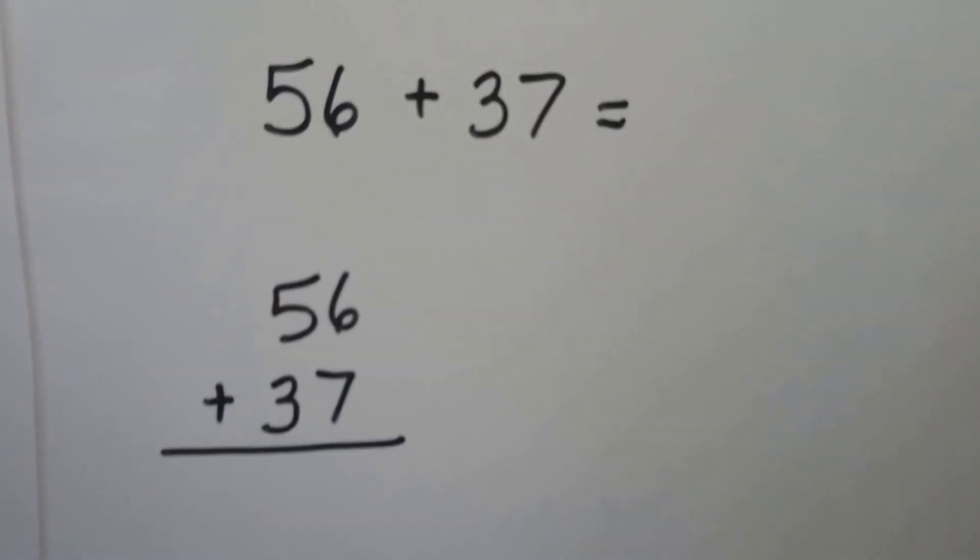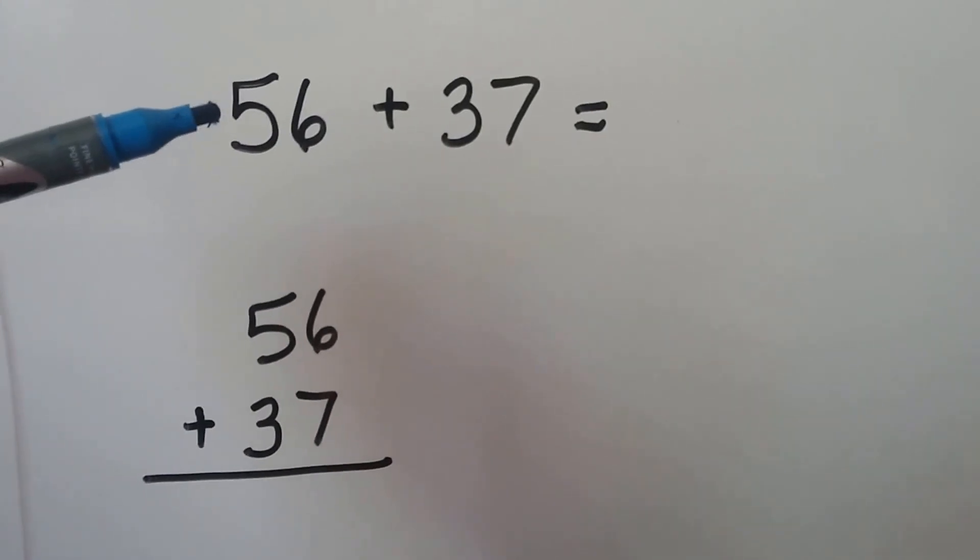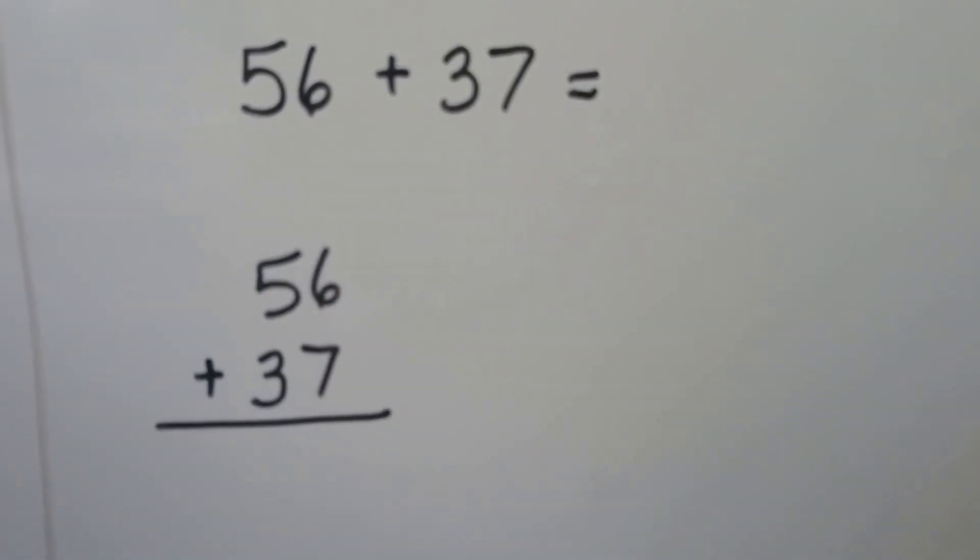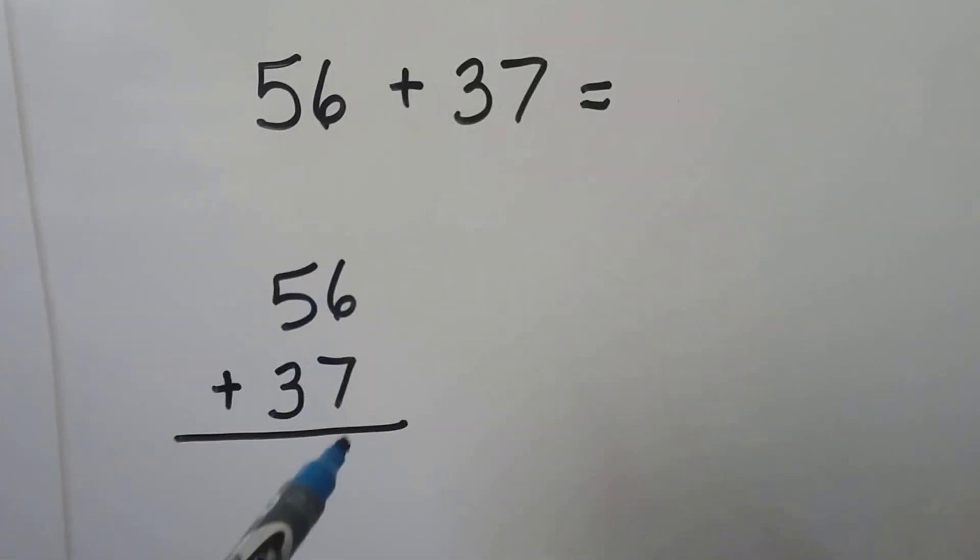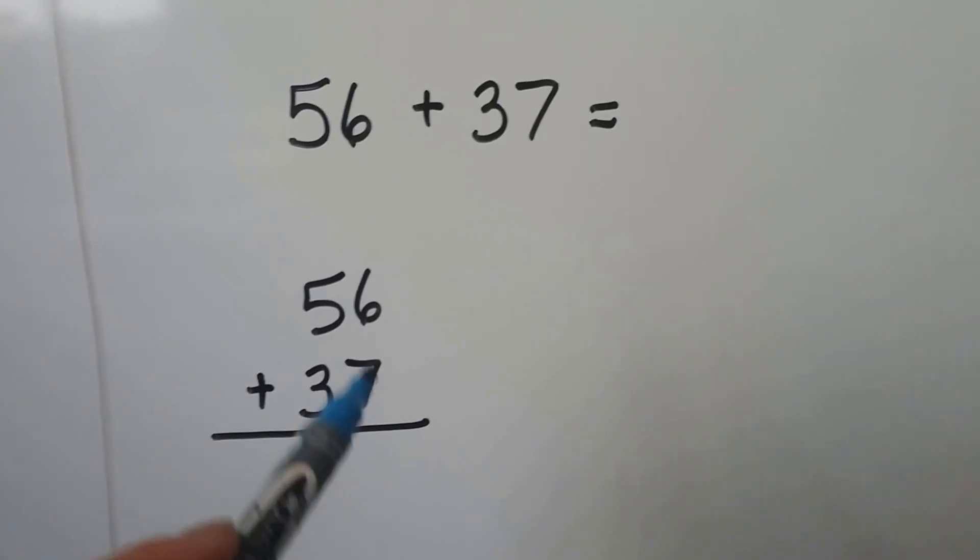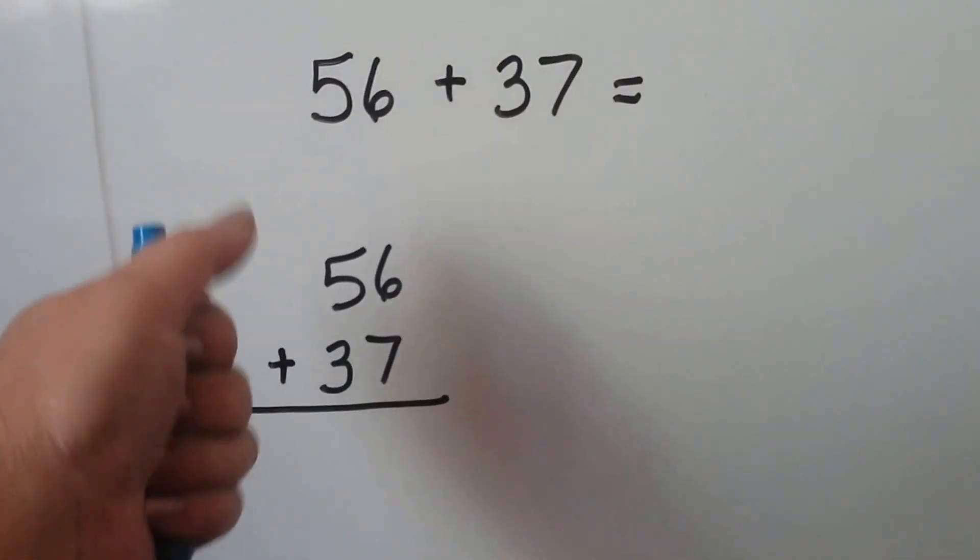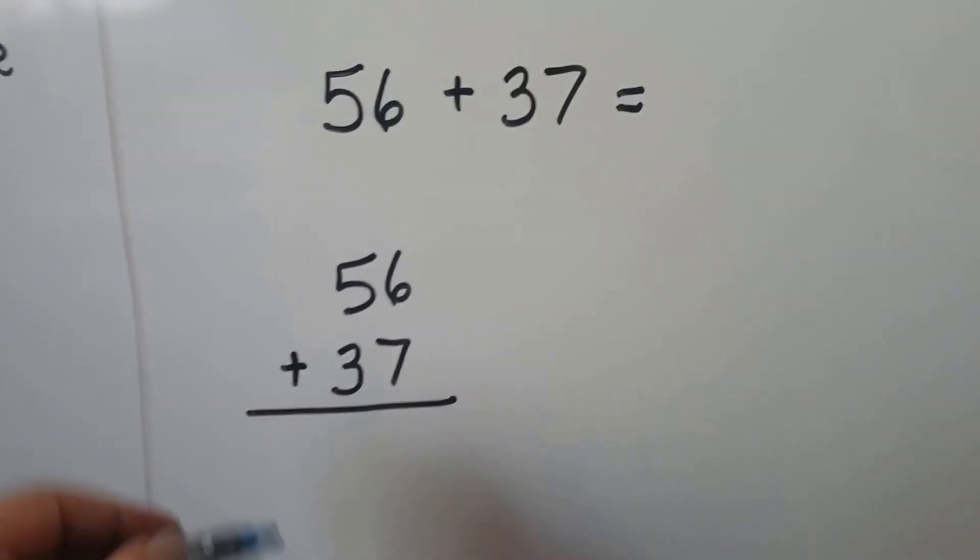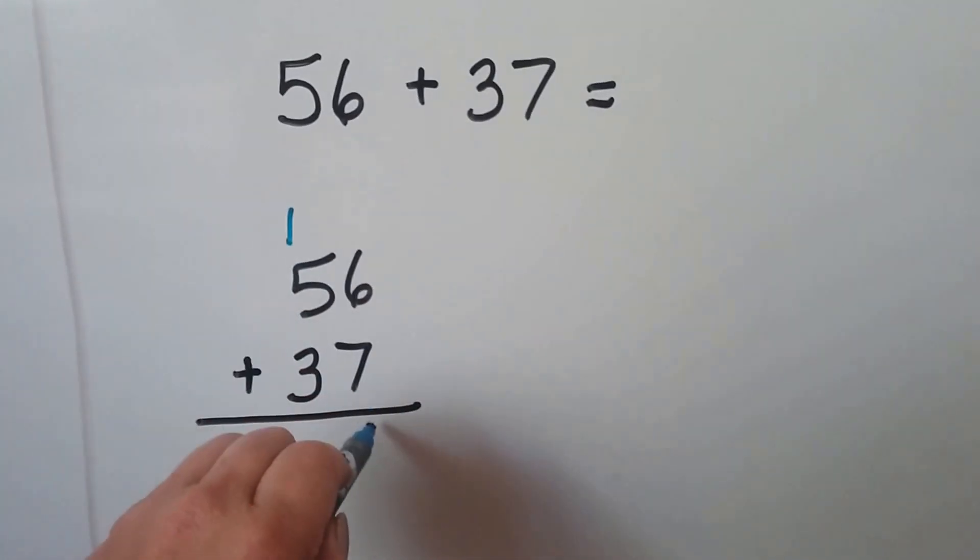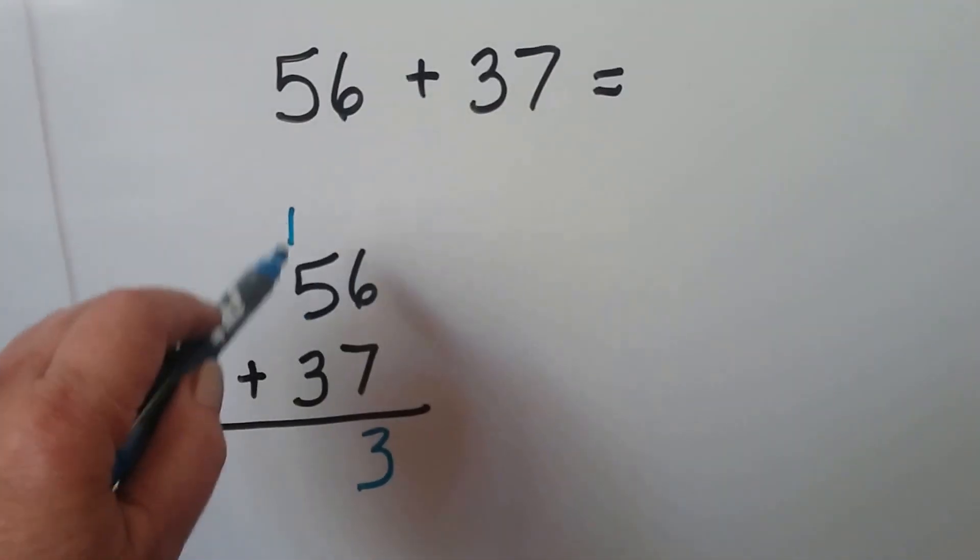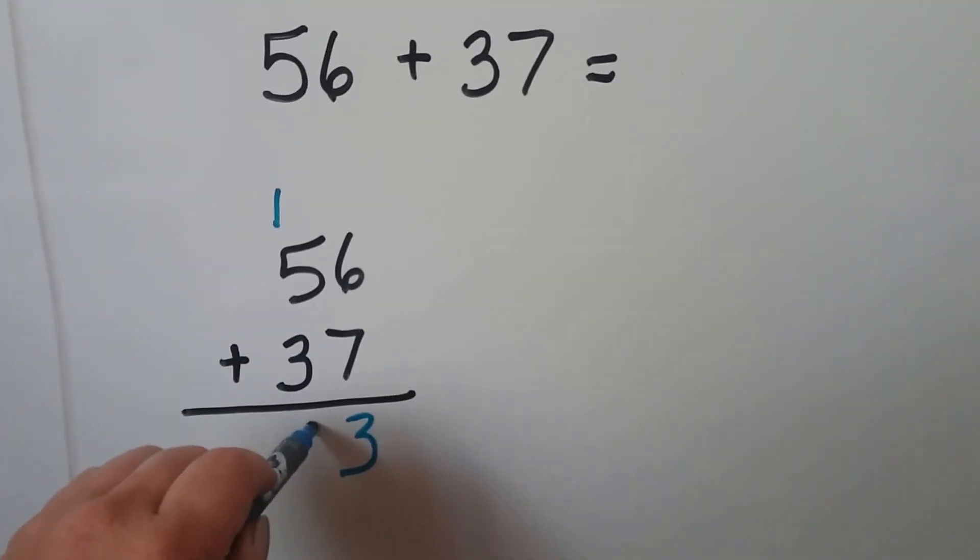Let's try it again. We have 56 plus 37 as an addition sentence. We can stack the 56 on top of the 37. We line the ones place up with the tens place. We start with the larger number seven and count on for the six, seven, eight, nine, 10, 11, 12, 13. We regroup the one, put the three down here. We add the tens place. Five, six, seven, eight, nine, 93.